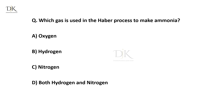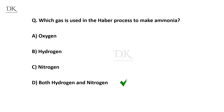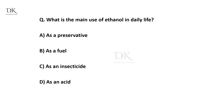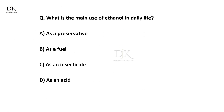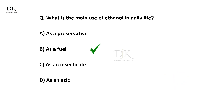Which gas is used in our process to make ammonia? The right answer is both hydrogen and nitrogen. What is the main use of ethanol in daily life? The right answer is as a fuel.